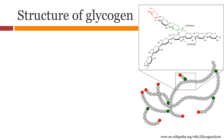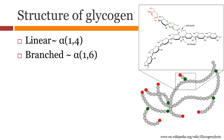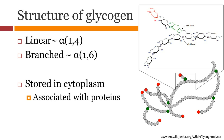Glycogen is a polymer of glucose and a highly branched molecule. There are two types of linkages: the alpha-1,4 linkage will form the linear chain, whereas the alpha-1,6 linkage will form branches. Glycogen is stored in the cytoplasm and usually found associated with multiple proteins.